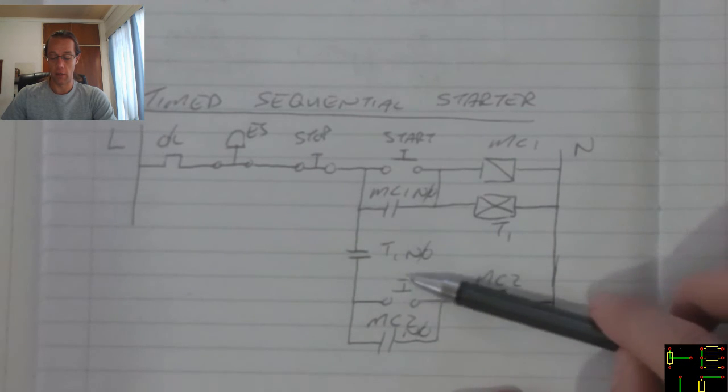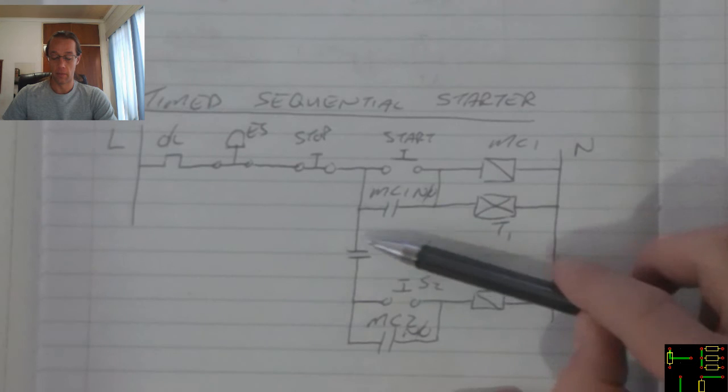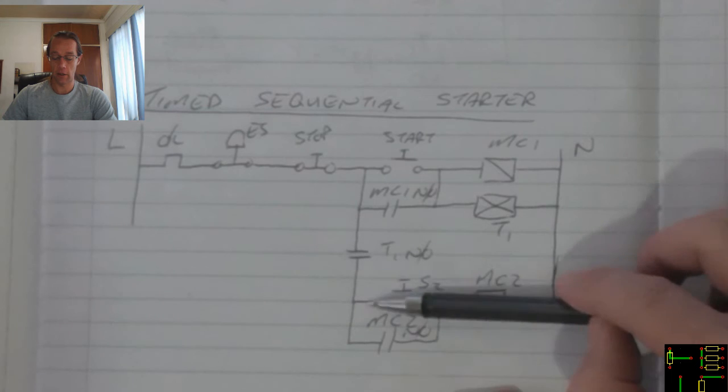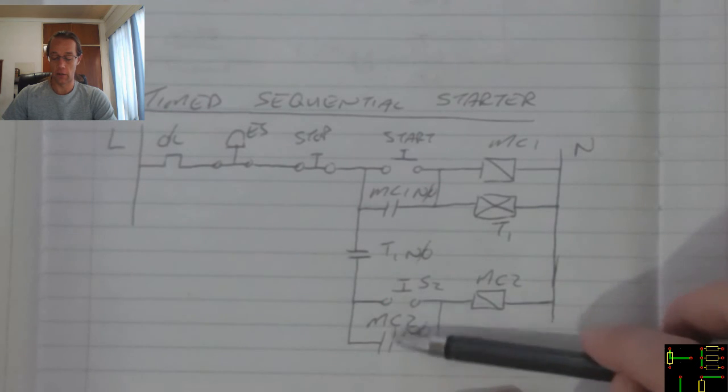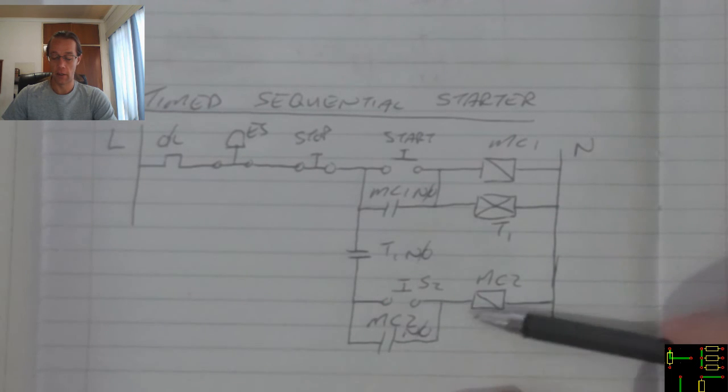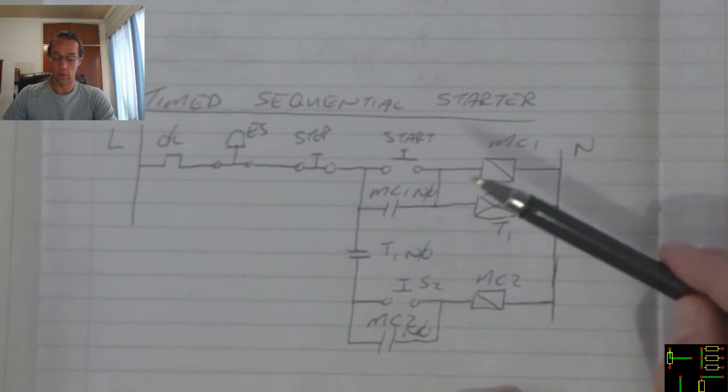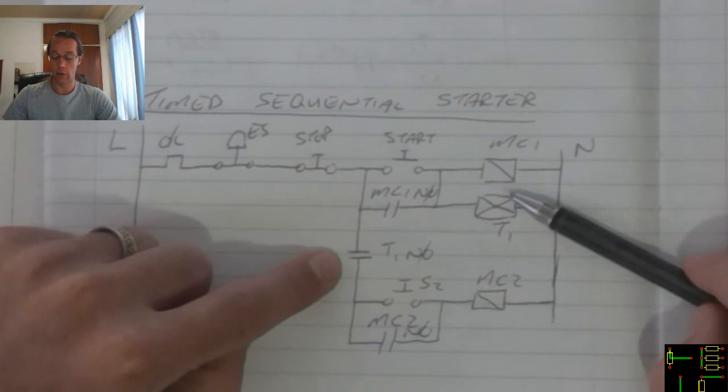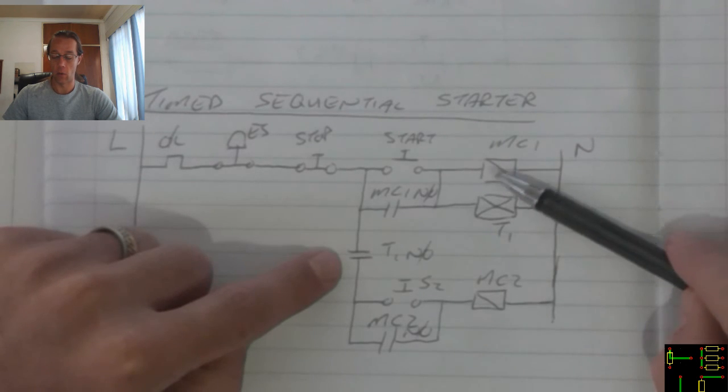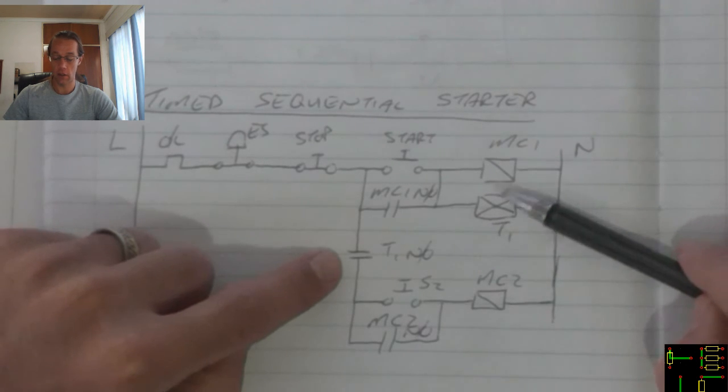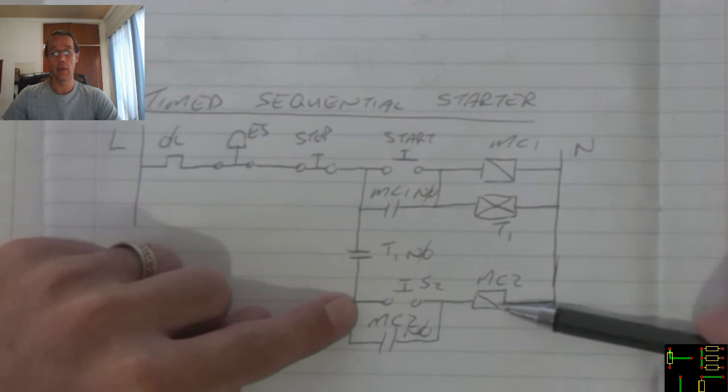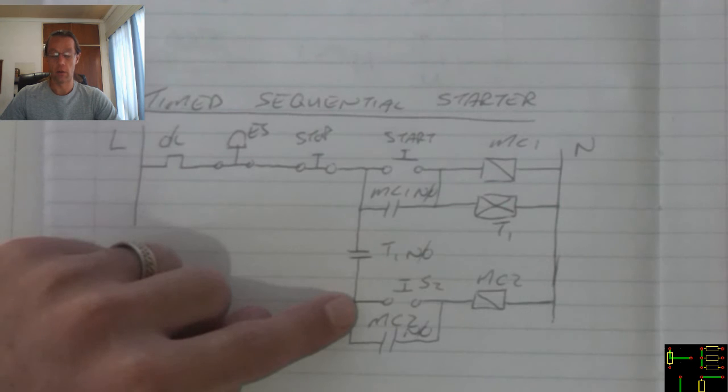The start button can be replaced by this contactor and then this contactor which is driven by that one, which then will allow the first contactor to activate along with the timer. And once the second timer activates it will automatically activate the second sequence in our system.